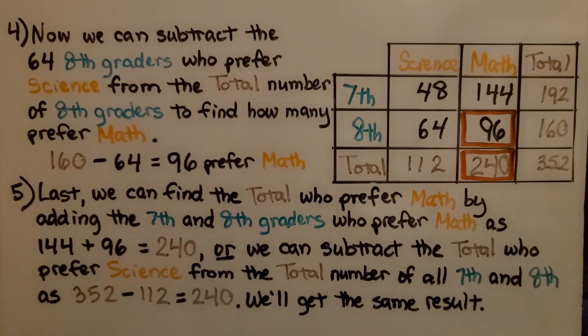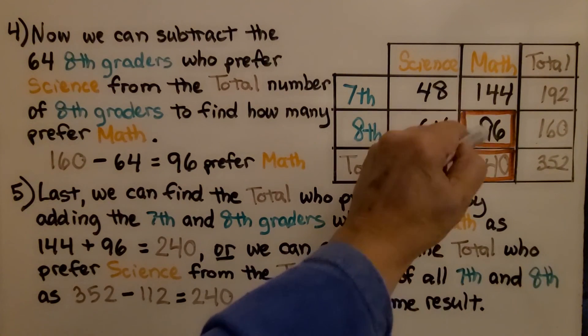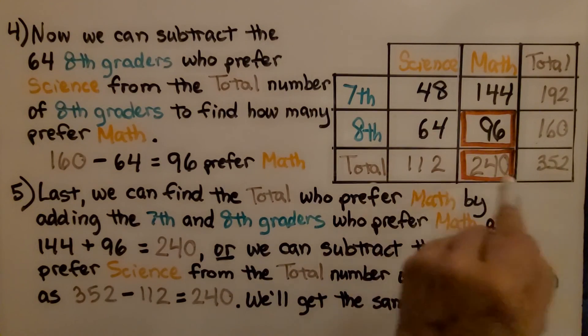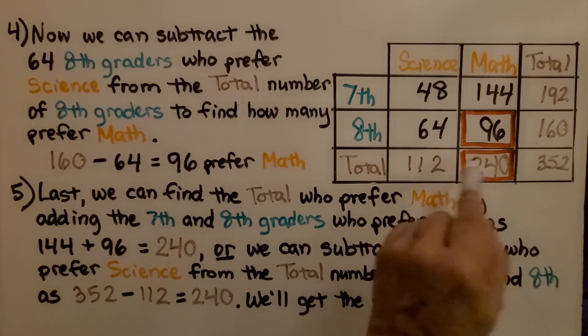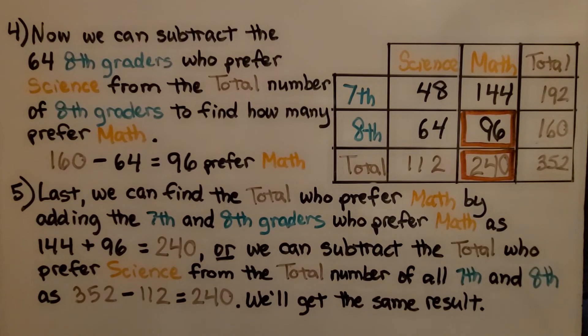Either way, we'll get the same result whether we add these two cells together or we subtract this cell from that total. We'll get 240.